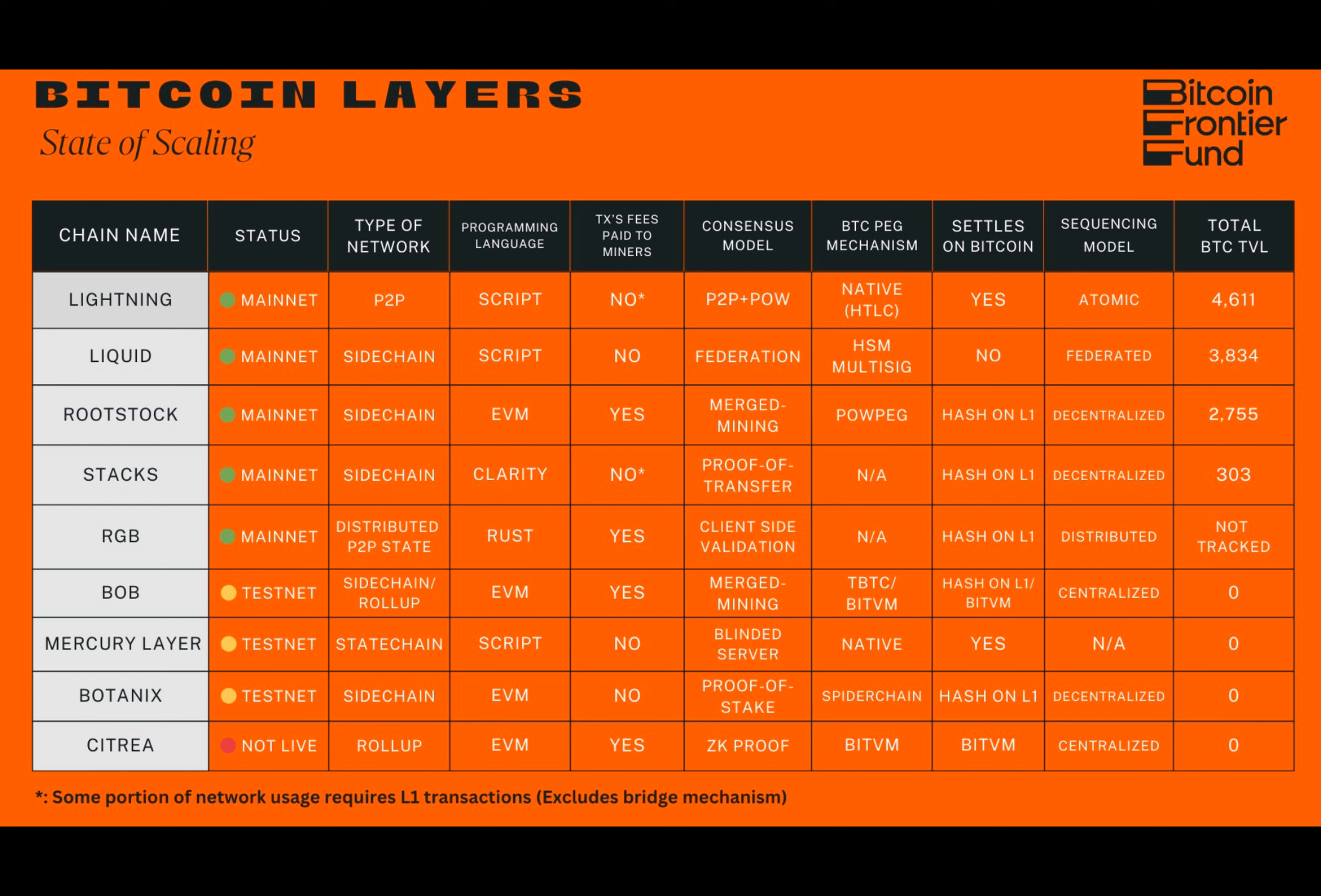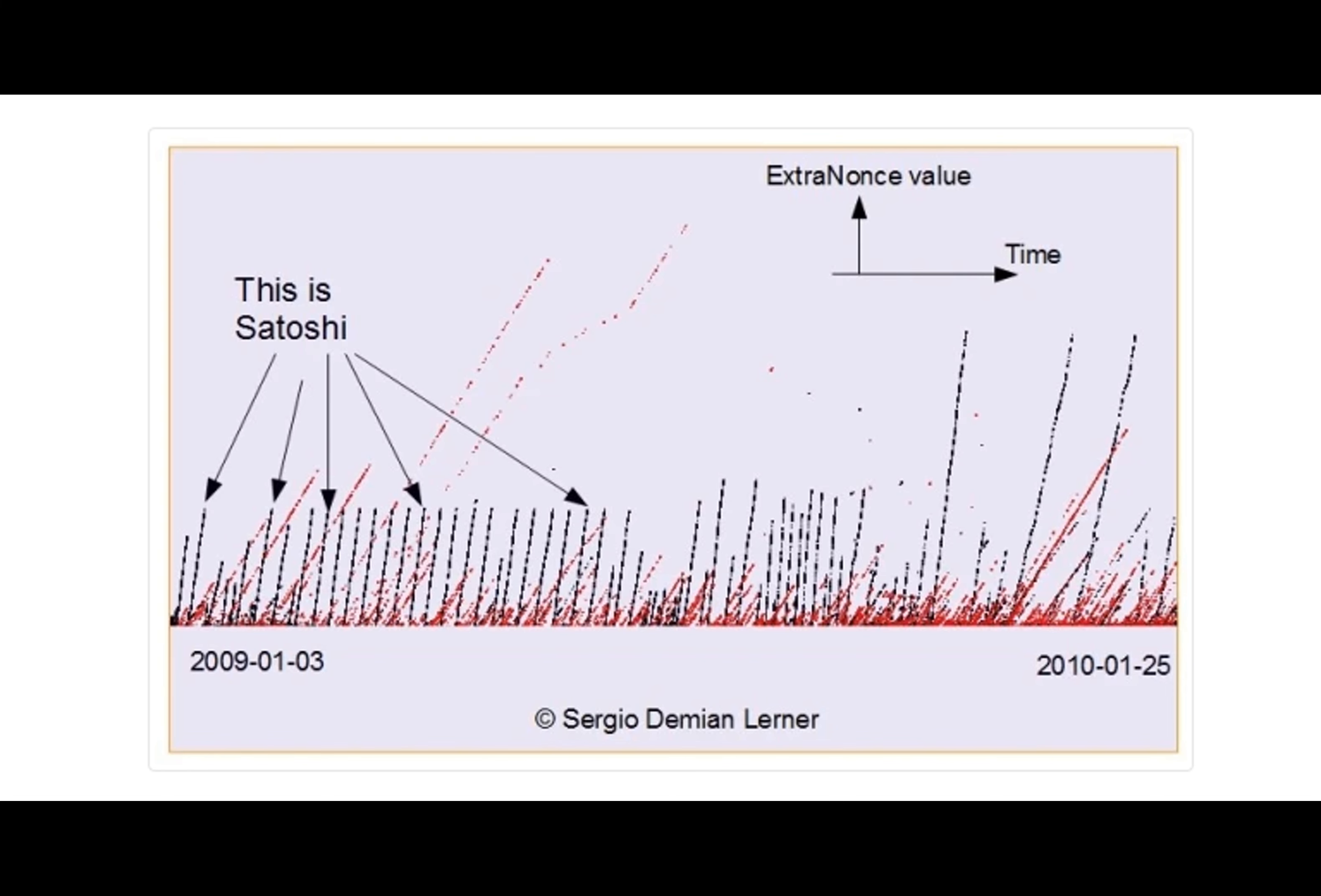Lerner is best known for his research exploring patterns to identify what hardware Satoshi Nakamoto used to mine in the early days of Bitcoin, which Cointelegraph covered in 2021.